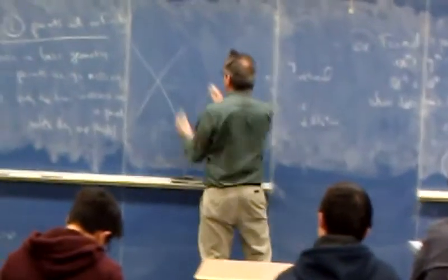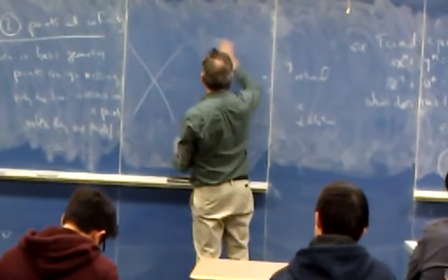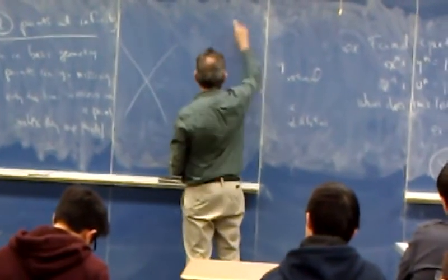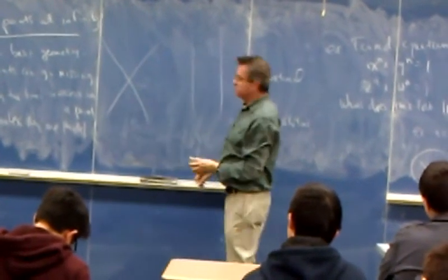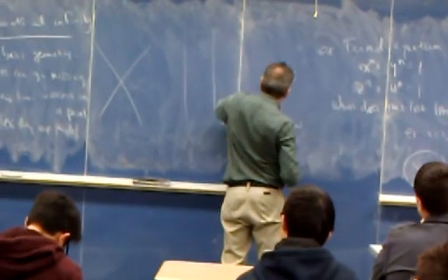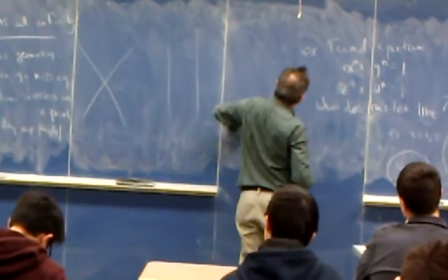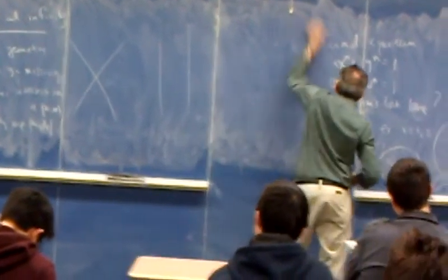So somehow, as these lines become parallel, all of a sudden there's no intersecting point. And there are many other situations like that.